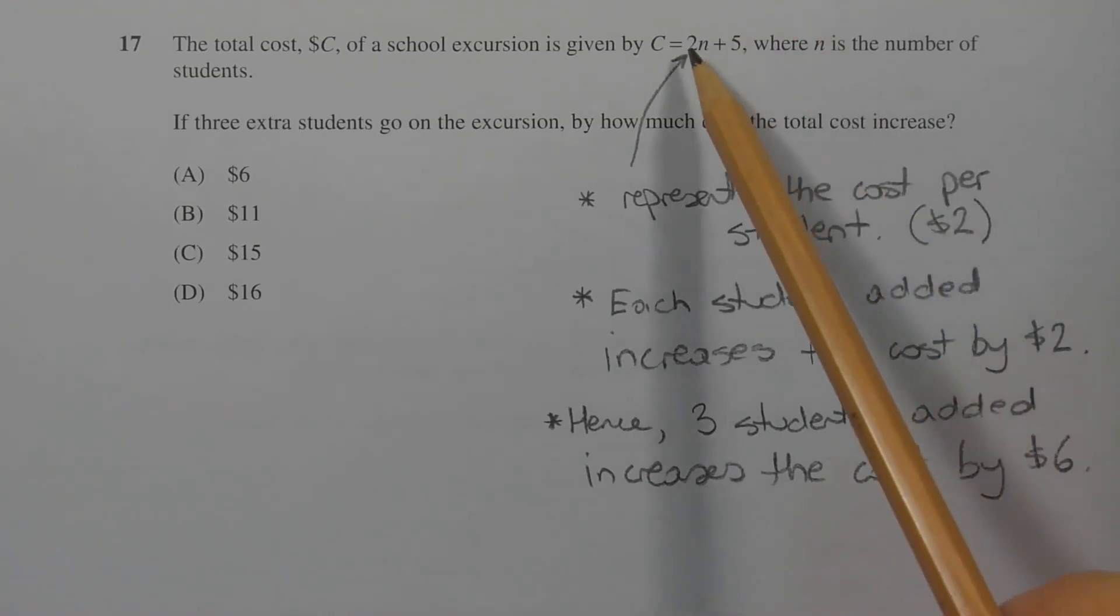Now the 2 in this case, which represents the gradient of the line, in fact represents the cost per student, which is $2. Now this means that each student added increases the cost by $2. So as n is increased by 1, the cost is increased by 2.